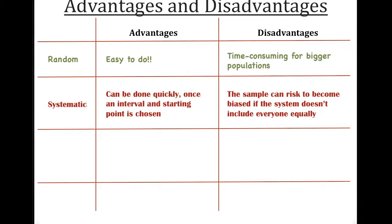Systematic is very easy because it can be done quickly. And once an interval is chosen, you can just keep going on and on and on for that interval. The disadvantage is that it can be biased because it actually doesn't include everyone equally. What would happen if every fifth person happens to be a kid, or a woman, or a man, or just not somebody who always represents the entire population that needs to be sampled?